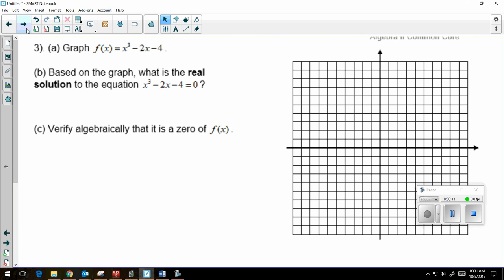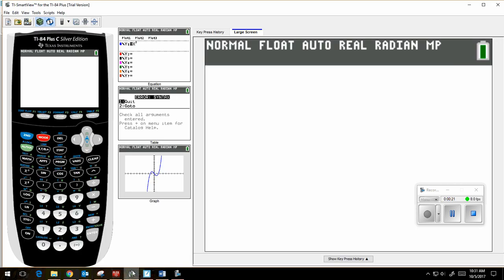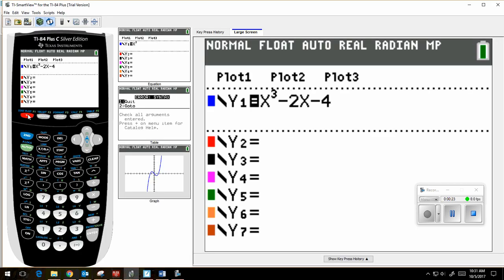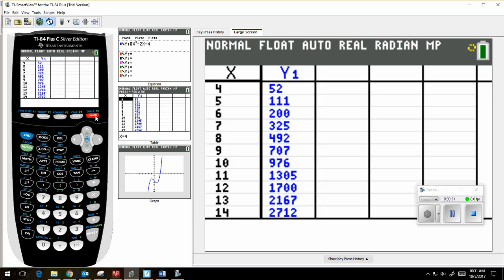Graph f of x equals x cubed minus 2x minus 4. So the first thing I want to do is go to my calculator and type this in to my y equals. I've already done that here. So in y equals, I'm typing in x cubed minus 2x minus 4. The next thing I want to do is go to my table, so second graph.